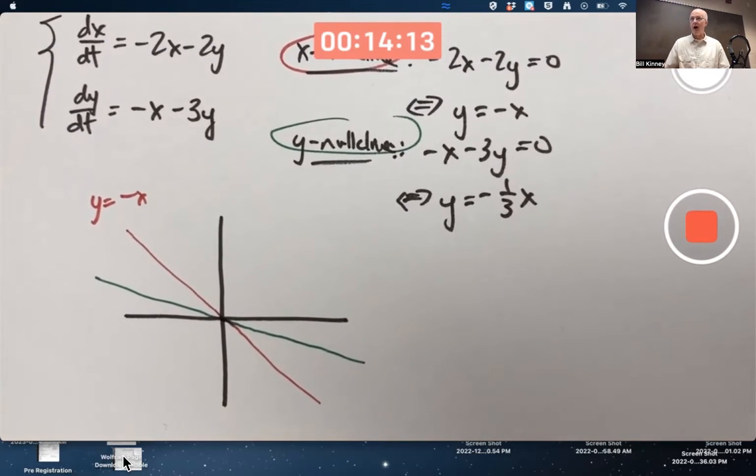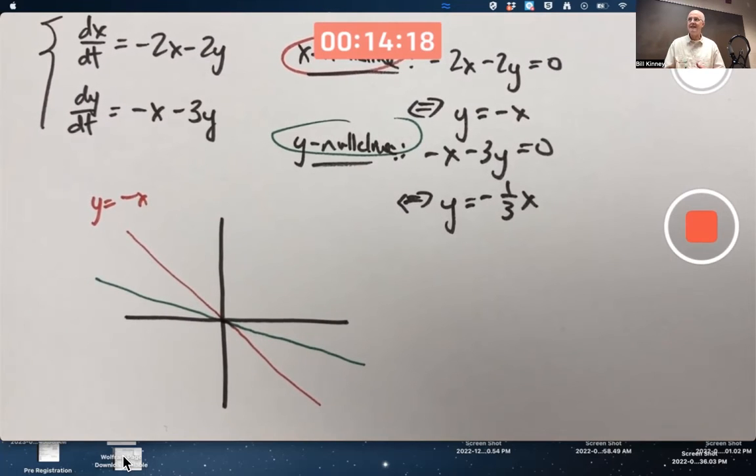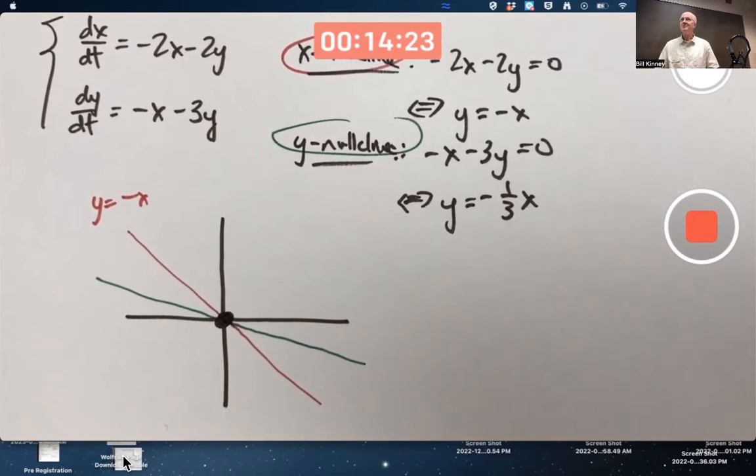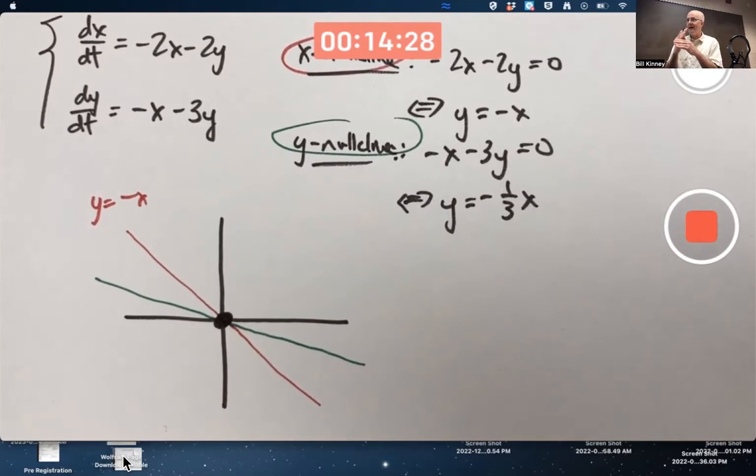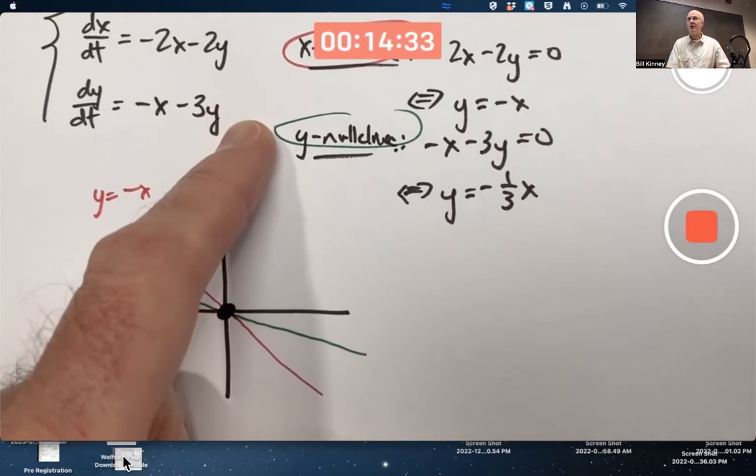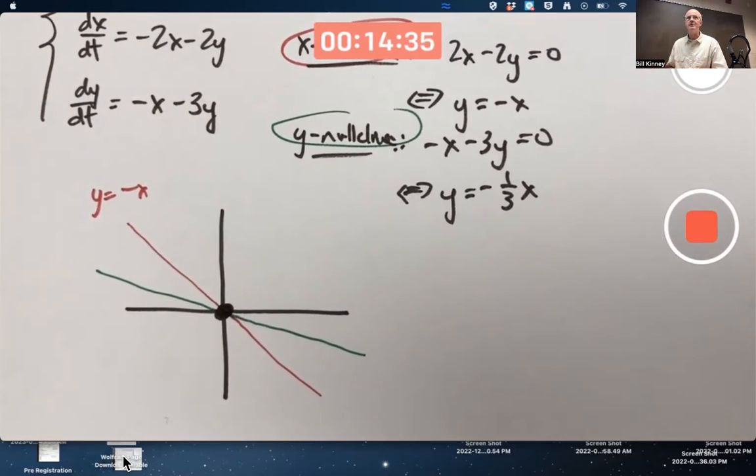Where x and y null clines cross, and this is always true whether it's a linear system or not, where they cross is equilibrium points. With a linear system, if the null clines are different lines, as they usually are, they're only going to cross at one point, and that'll be the origin. With linear systems and no constant terms for those linear systems, it's like a linear transformation. The origin is going to be an equilibrium point always. And again, if the null clines are different lines, it'll be the only equilibrium point.